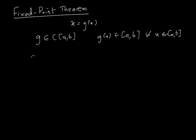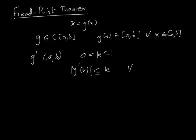In addition, if we assume that g' (the derivative) exists on [a,b], and there is a positive constant k less than 1 such that the absolute value of g'(x) is less than or equal to k for all x in [a,b], then we know that the sequence — for any initial guess p₀ in [a,b] — defined by pₙ = g(pₙ₋₁), will converge.